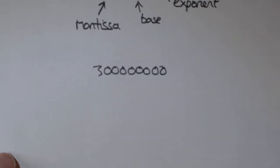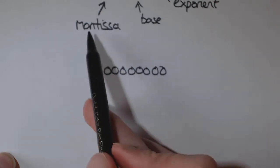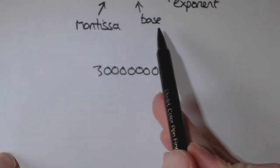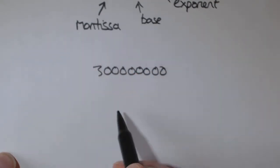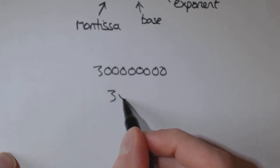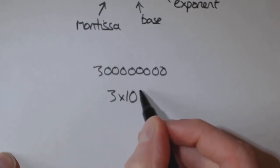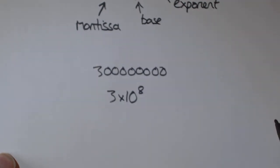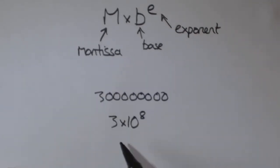Instead of writing something as big as that, what you can do is break it down into mantissa, base, and exponent. So you can see that's 3 times 10 to the power of 8, in which case 3 is the mantissa and 8 is the exponent.